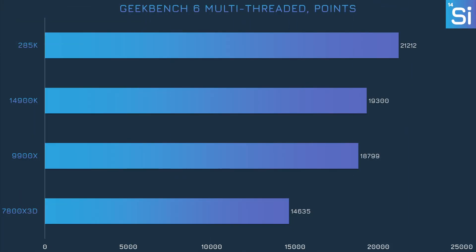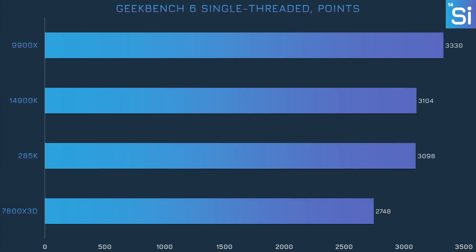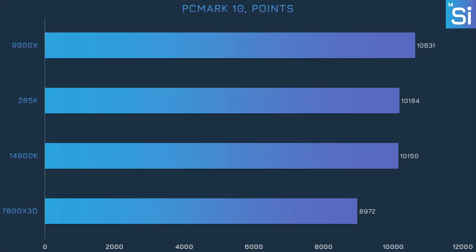It's a similar story in Geekbench 6, where the 285K has a 10% lead over the 14900K in the multi-threaded test, but the 285K pretty much ties the 14900K in the single-threaded test and actually loses to the 9900X, which was 7% faster. In PCMark 10, since scores factor in the performance of the integrated graphics, the margins are more meaningful than they look. The 9900X took a clear lead, while the 285K and 14900K tied, and the 7800X3D lagged behind.